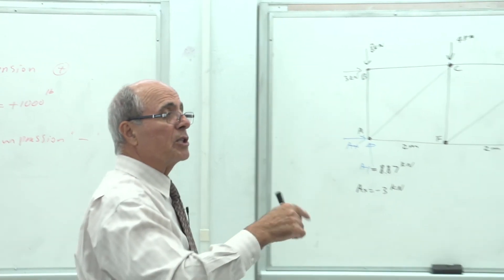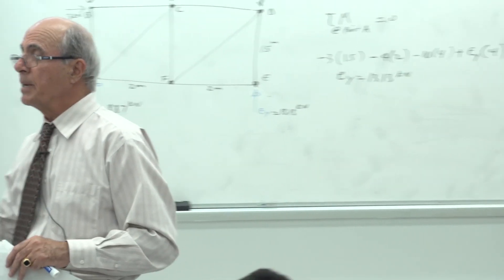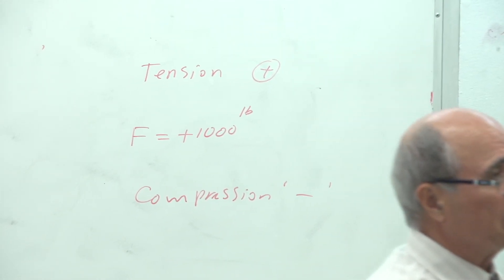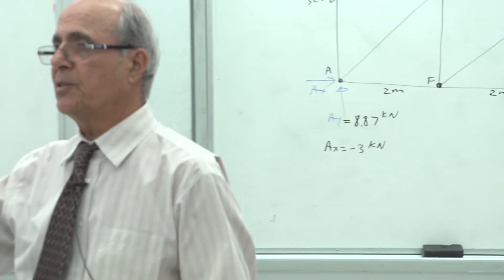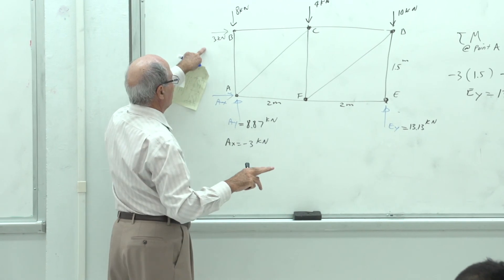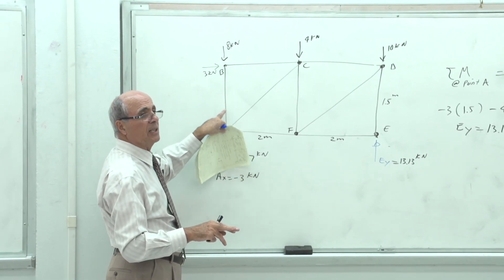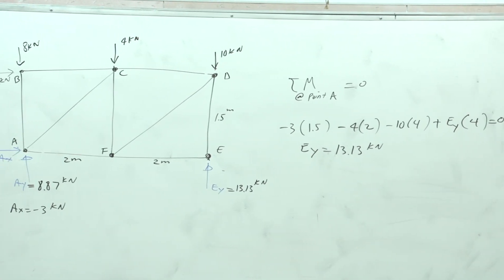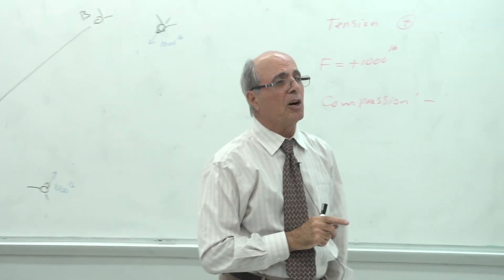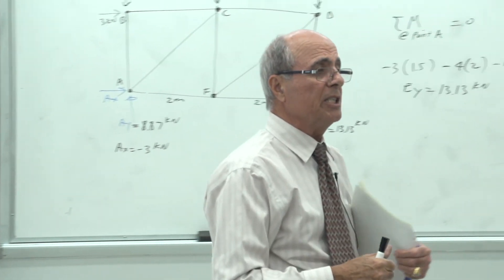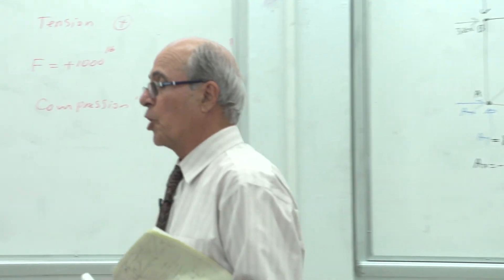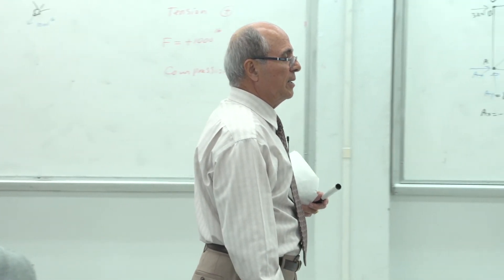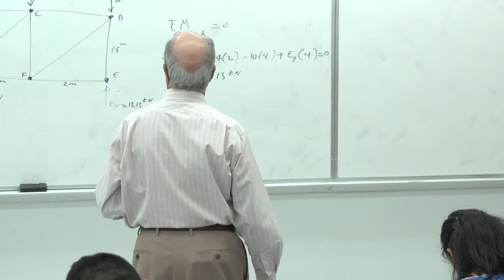Step two: find a joint with only two unknown members. Joint A has three members — not solvable yet. We should go to joint E or joint B. When drawing the unknown member forces, always put them in tension mode — forces pointing away from the joint. That is our convention. The sign of the answer will automatically tell you whether the member is actually in tension or compression.